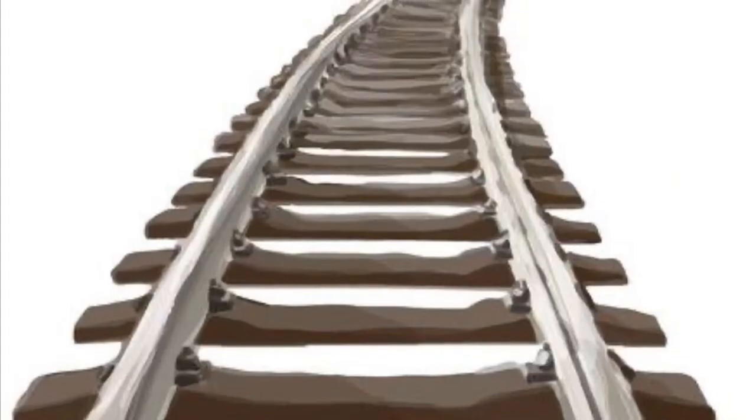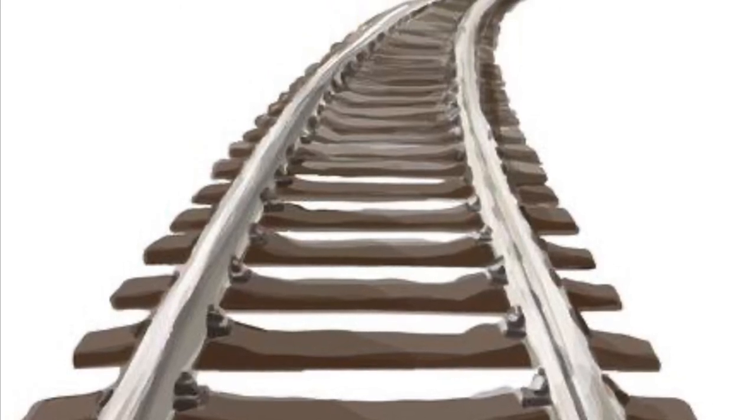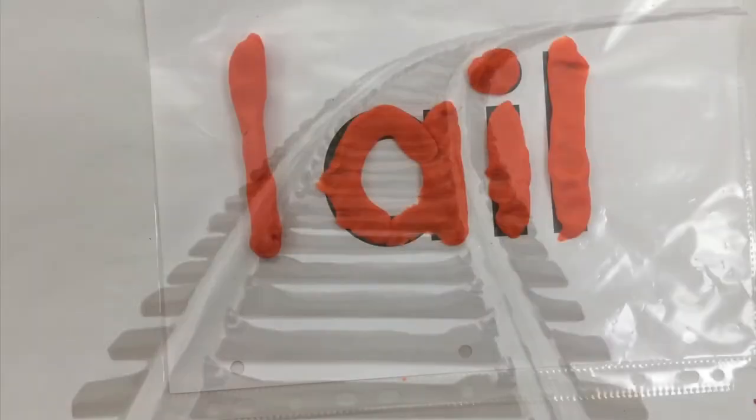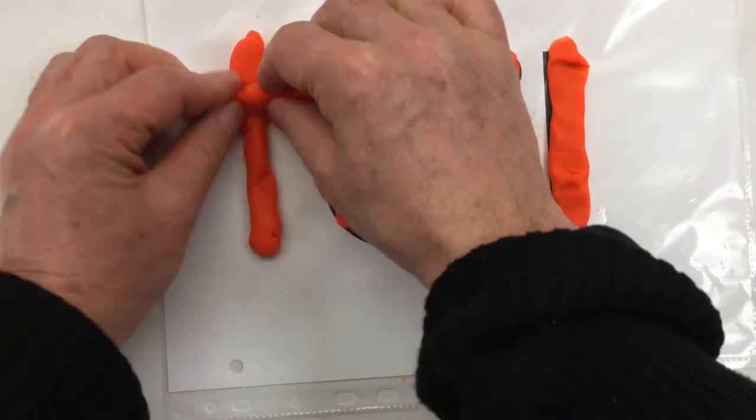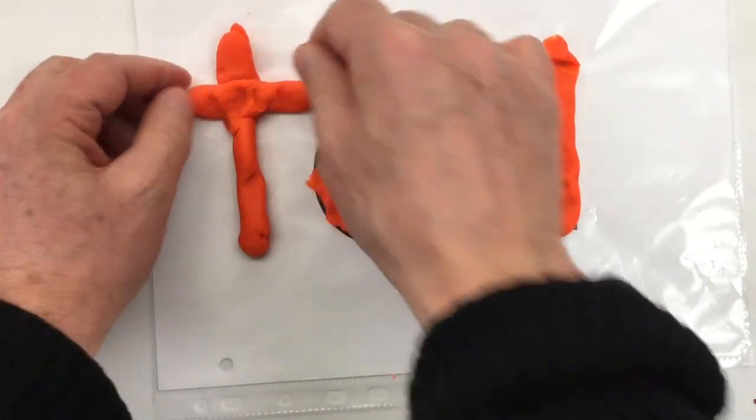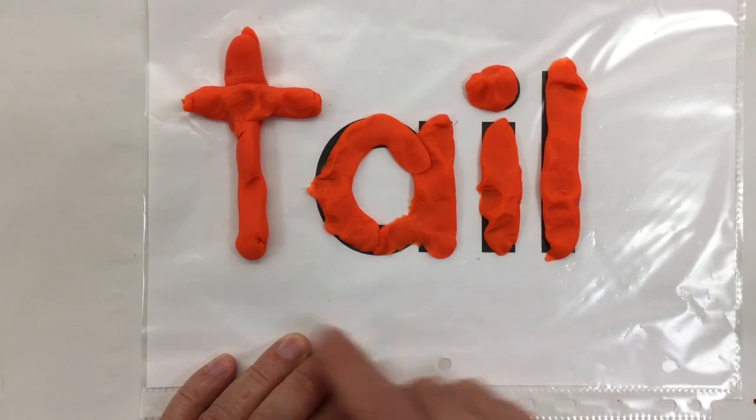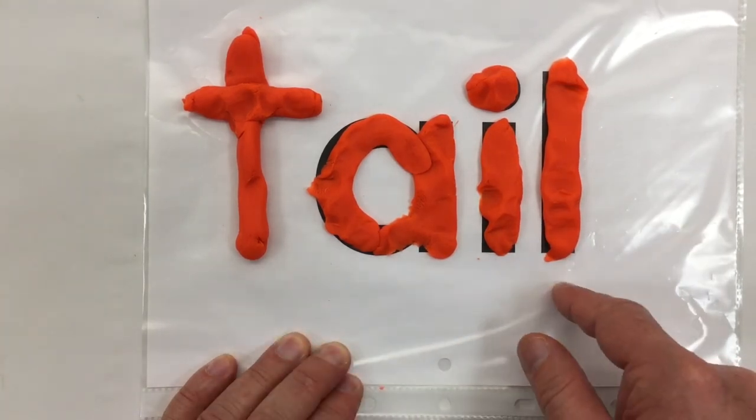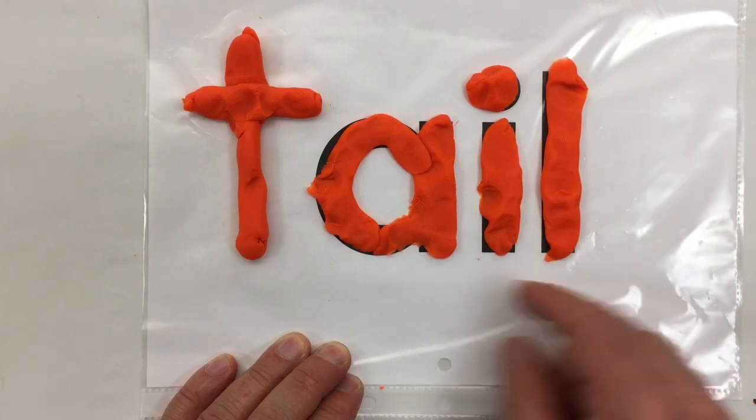If I make that into a letter T, I've got 'tail'—a cat, lion, or tiger might have a tail.